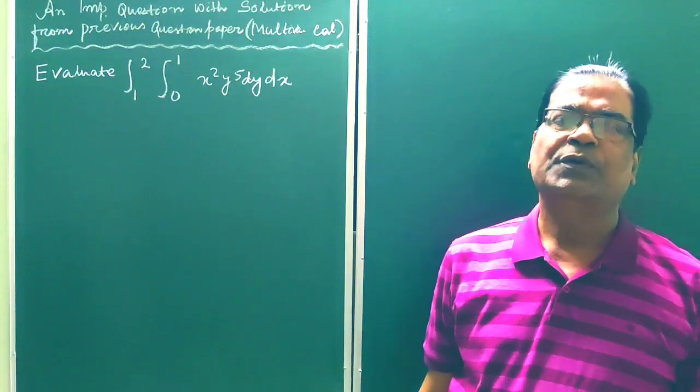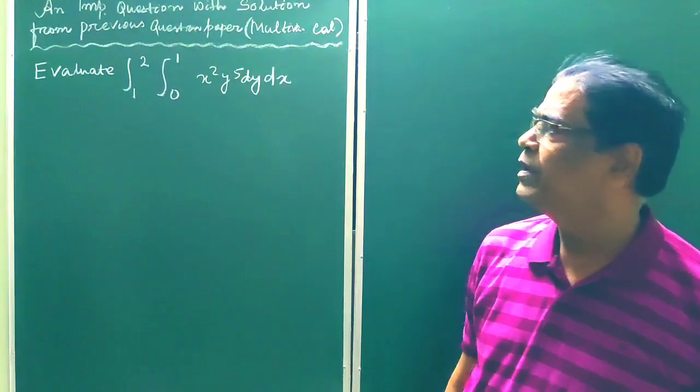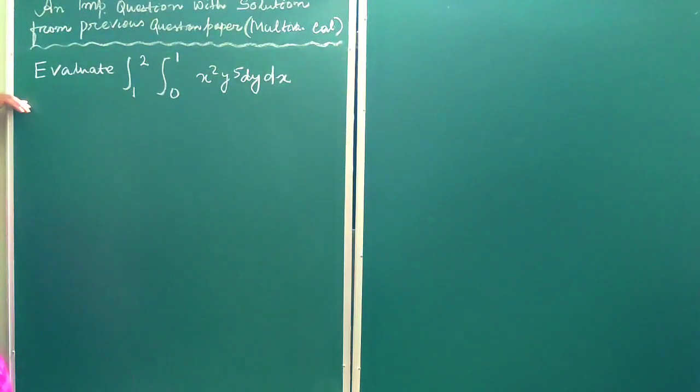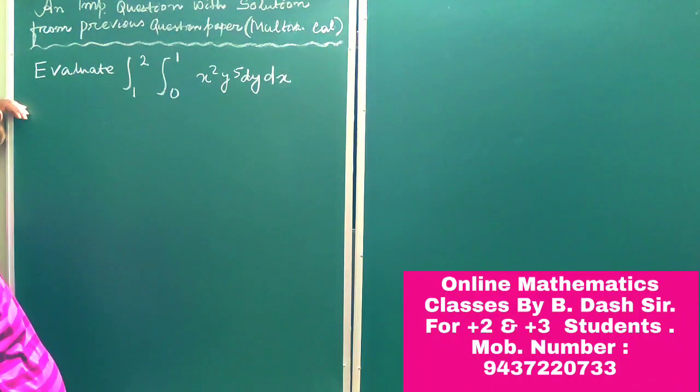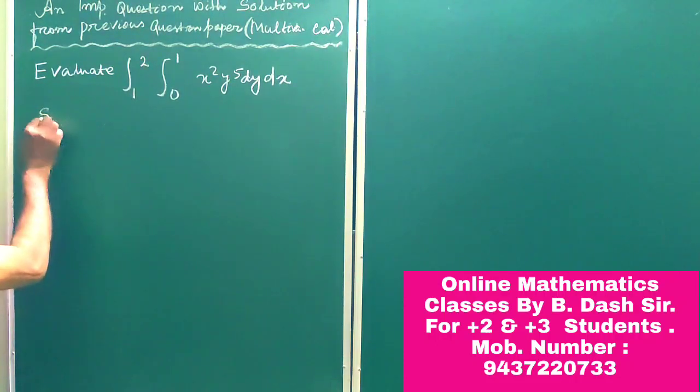Hello students, welcome to my channel. In this class I am going to solve a problem from multivariate calculus. The question is: evaluate integration 1 to 2, integration 0 to 1, x square into y to the power 5 dy dx. Now let us proceed for solution of this problem.